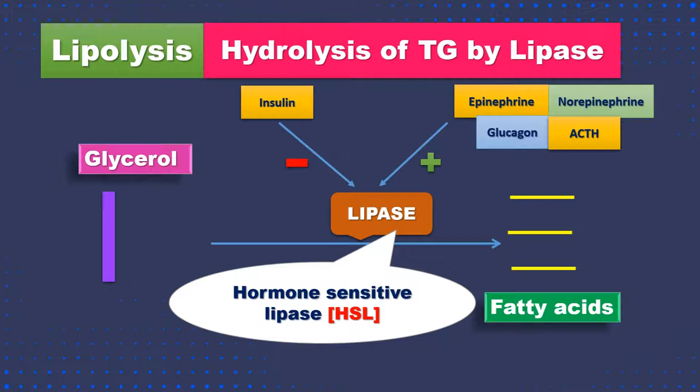You should know the difference between hormone-sensitive lipase and lipoprotein lipase, which we already studied in LDL and chylomicron metabolism — these are different isoenzymes of lipase. Hormone-sensitive lipase function is affected by hormones: some hormones can stimulate or enhance its activity, while insulin can inhibit its activity and thereby prevent lipolysis.